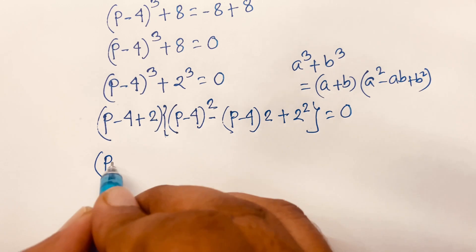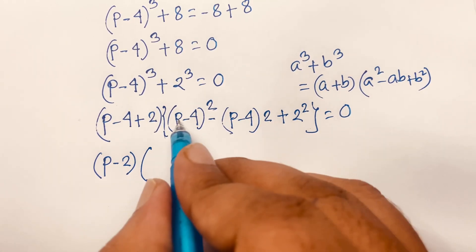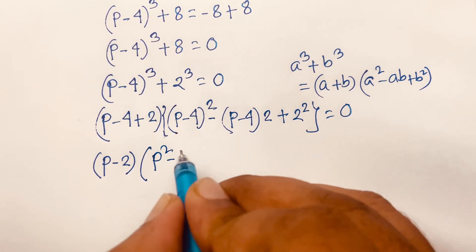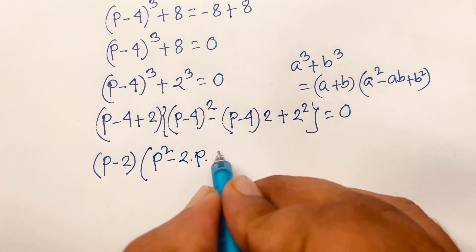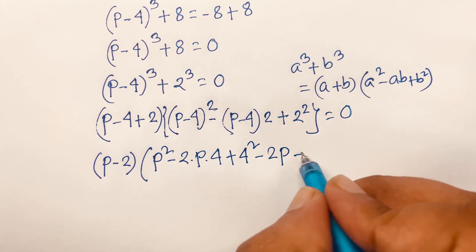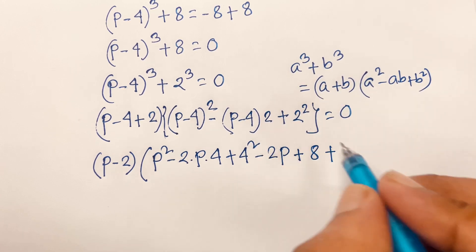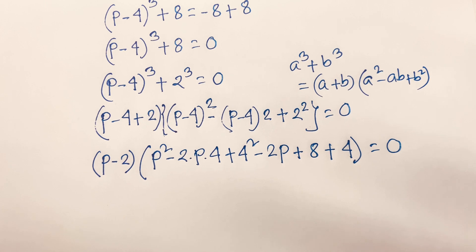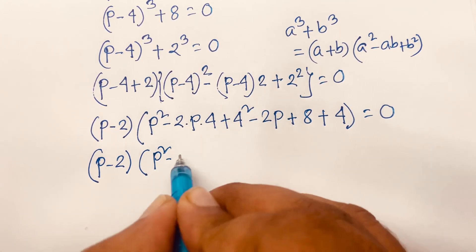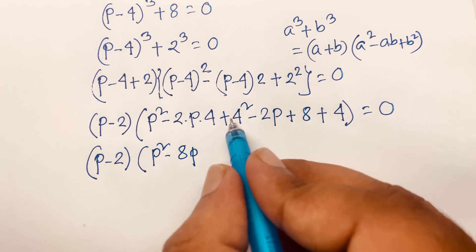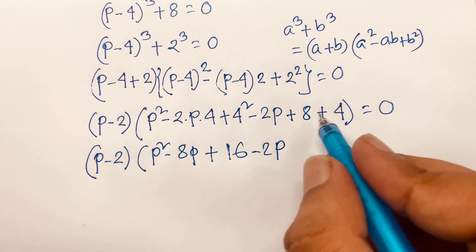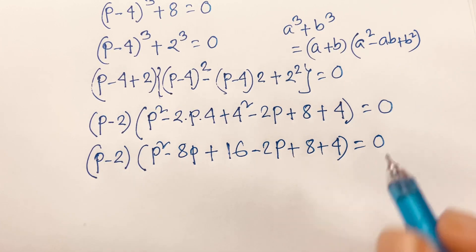Simplifying the first factor: p minus 4 plus 2 gives p minus 2. For the second factor, expanding (p minus 4)² using a² minus 2ab plus b² gives p² minus 8p plus 16. Then subtracting 2 times (p minus 4) gives minus 2p plus 8, and adding 2² gives plus 4.